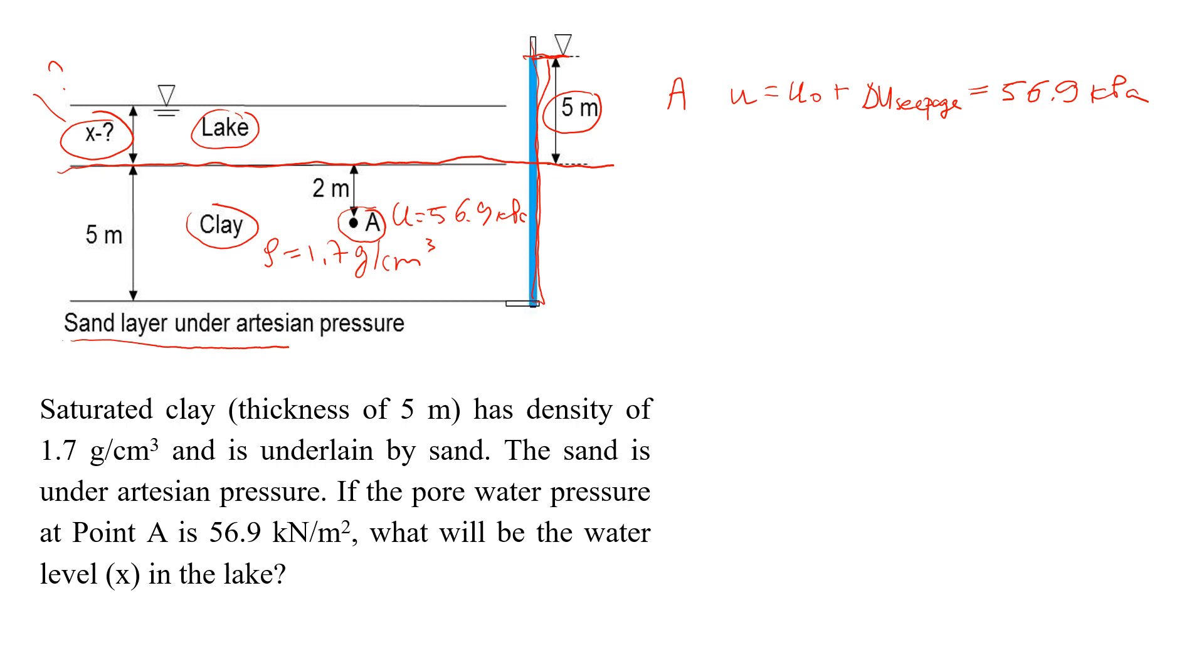So let's start with the hydrostatic pressure at point A. The definition is unit weight of water times hA, which shows you how much water is above point A. So point A is here. We have two meters of water in the clay and additional here x. So that will be hA. So I can rewrite that it will be equal to unit weight of water times 2 plus x.